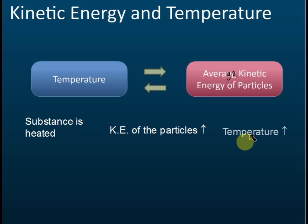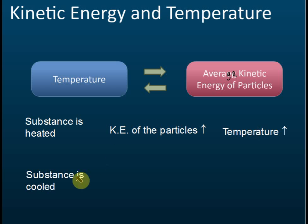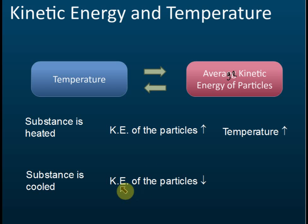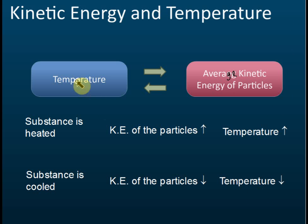If a substance is heated, the temperature increases, and the kinetic energy of the particles will increase — higher kinetic energy means higher temperature. If the substance is cooled, the kinetic energy of the particles will decrease, and therefore the temperature will decrease. That is the relationship between temperature and average kinetic energy.